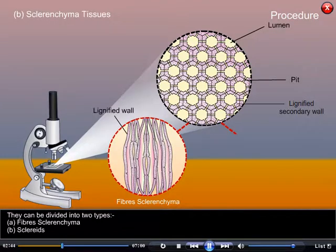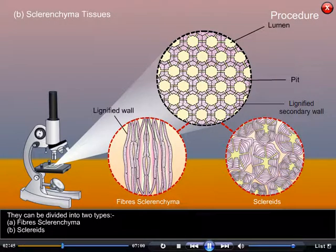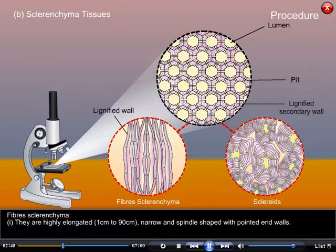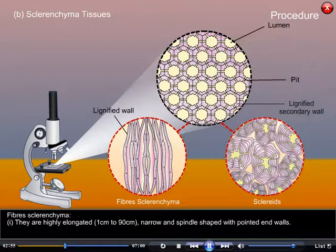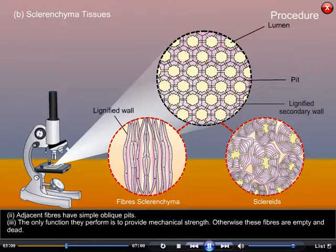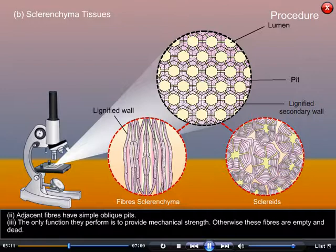Fibrous sclerenchyma: They are highly elongated, narrow and spindle-shaped with pointed end walls. Adjacent fibers have simple oblique pits. The only function they perform is to provide mechanical strength; otherwise these fibers are empty and dead.